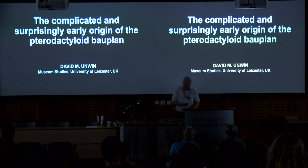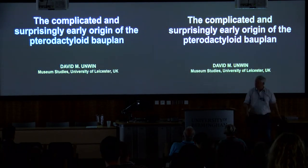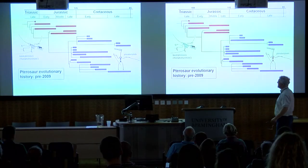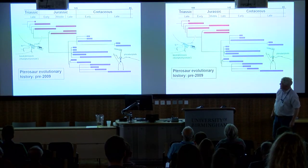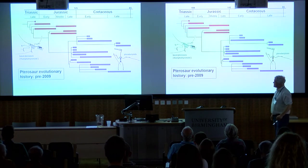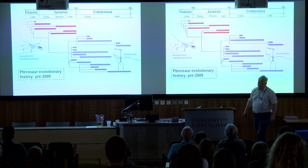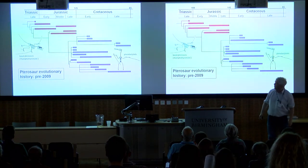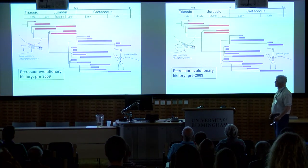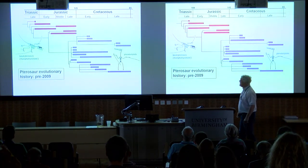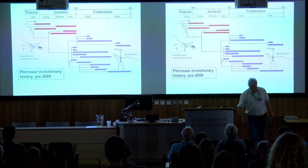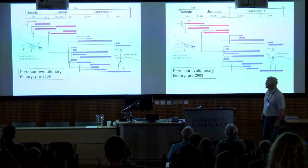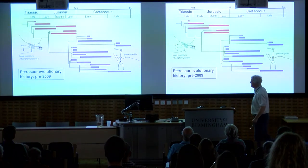Thank you very much, Emily. This is a very simple picture of pterosaur evolution. On the left-hand side at the top, you see what we used to call ramphorhynchoids — a paraphyletic group of mostly long-tailed pterosaurs, which will always be depicted in red. Bottom right, you see a much larger group, a real clade: pterodactyloids with their classically short tails.